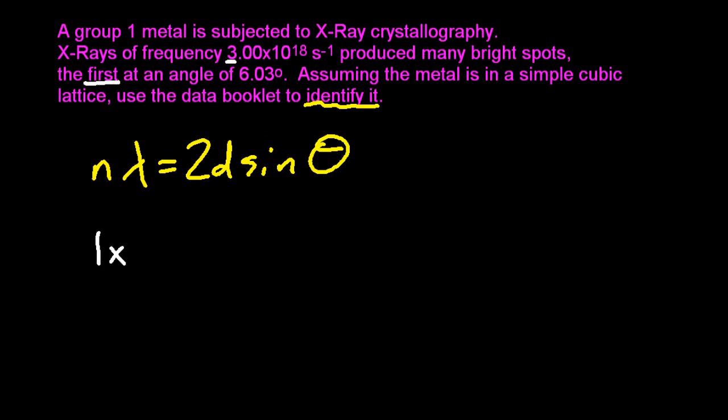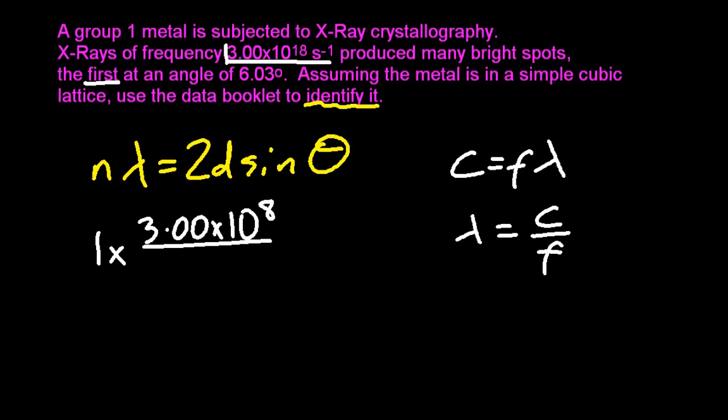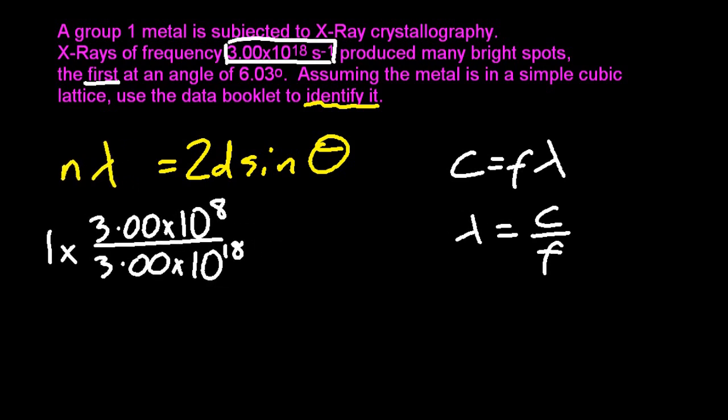So if it's the first angle, n is going to be one. Now I've got the frequency there, and I don't need the frequency in this equation, I need the wavelength. So by using these equations, the speed of light divided by frequency gives me the wavelength.